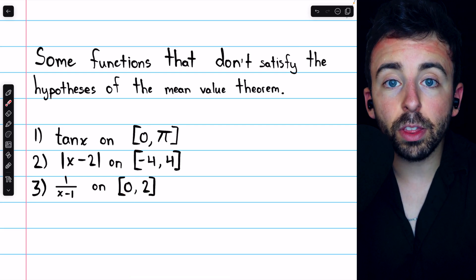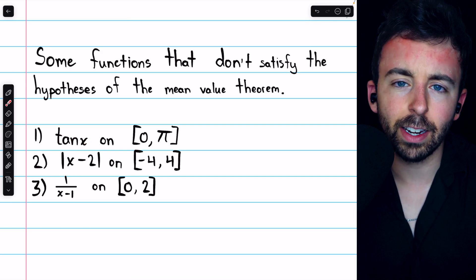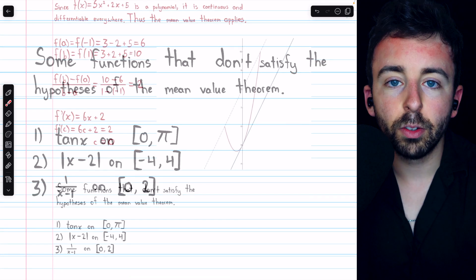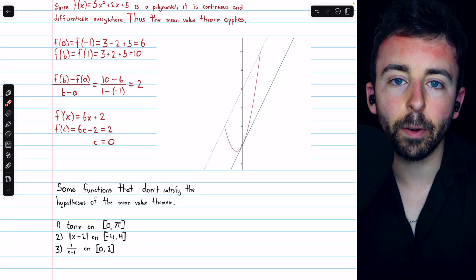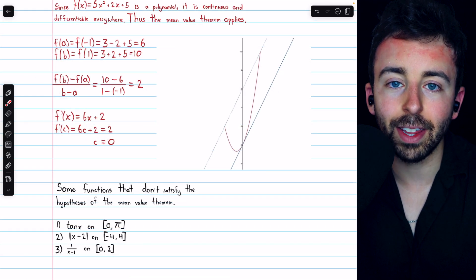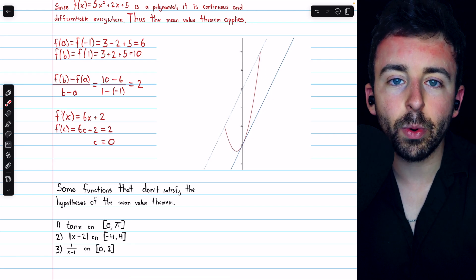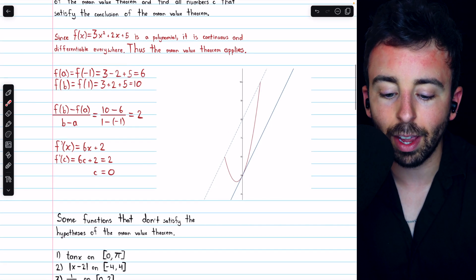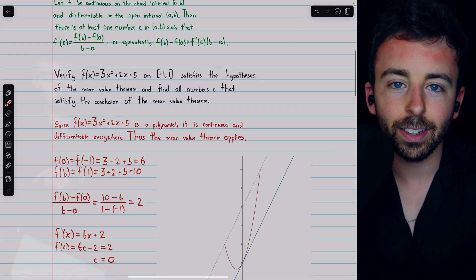The mean value theorem would apply to these functions on different intervals, but on these intervals it doesn't apply. So that's how to verify that a function satisfies the mean value theorem and how to find the number c guaranteed to exist by the theorem. Let me know in the comments if you have any questions, and be sure to check out my Calculus 1 course and Calculus 1 Exercises playlist in the description for more. Thanks for watching!